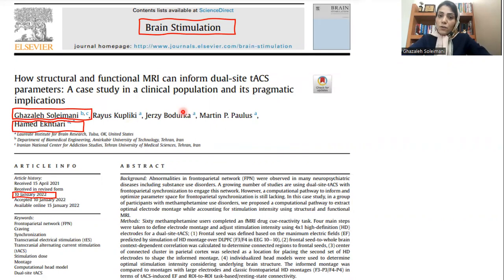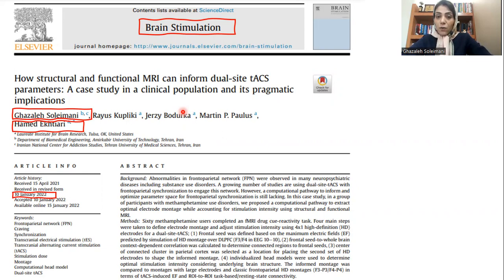If I want to summarize the main goal of this manuscript, I can say that we wanted to use brain mapping tools such as structural and functional MRI to inform a type of brain stimulation technology named transcranial alternating current stimulation, or TACS, to optimize electrode montage for targeting a network inside the brain named the executive control network, or frontal parietal network.